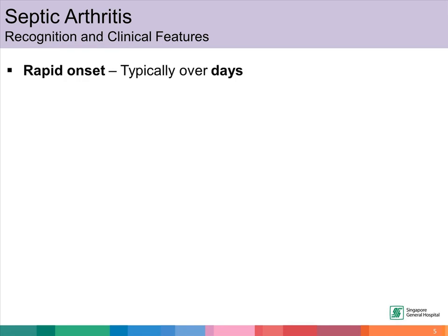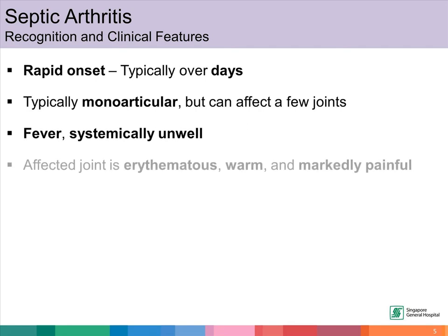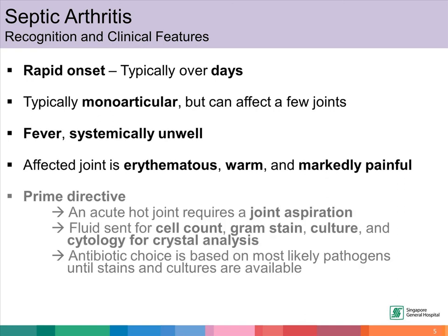Septic arthritis happens quickly over a few days. It commonly affects one joint, but can affect a few joints as well. The patient has a fever and usually appears systemically unwell. The affected joint is red, warm, and very painful. It is very important that an acute hot joint is aspirated and the fluid is sent for analysis. Antibiotic choice is given based on the most likely pathogen until stains and cultures from the joint fluid are available.